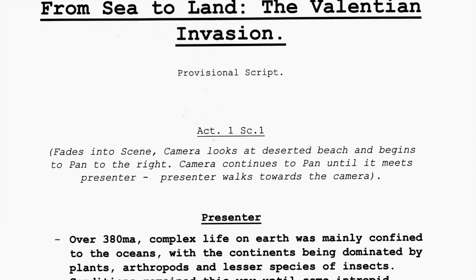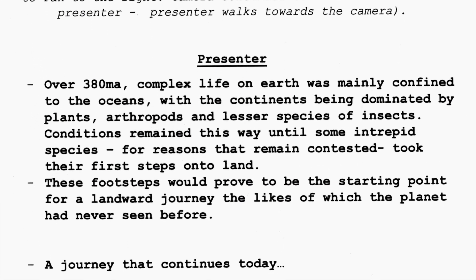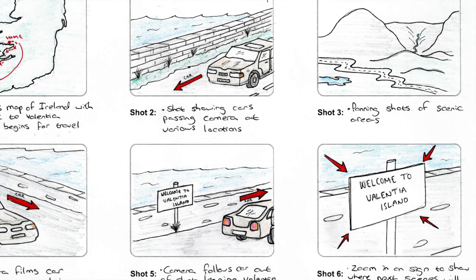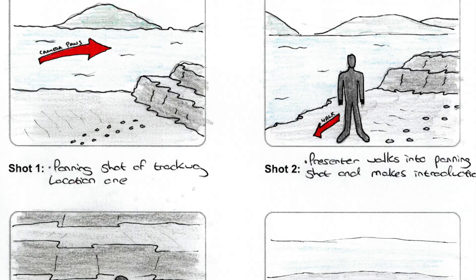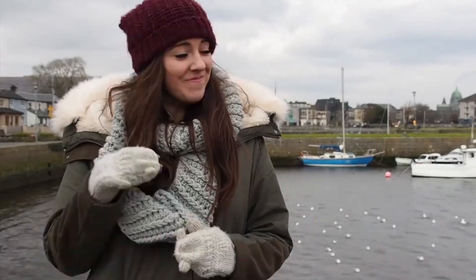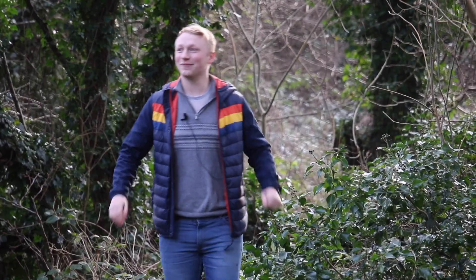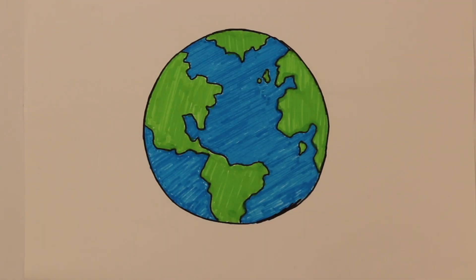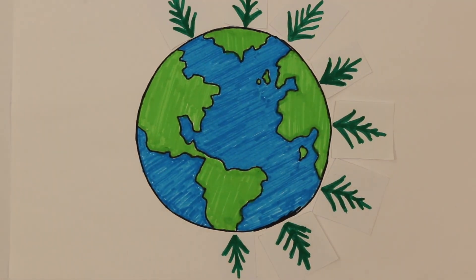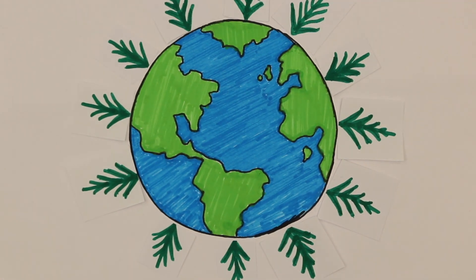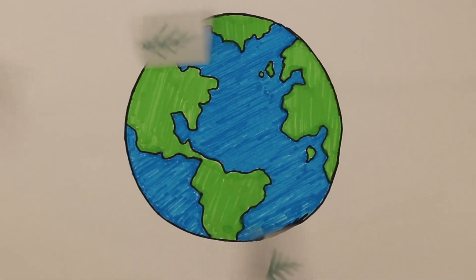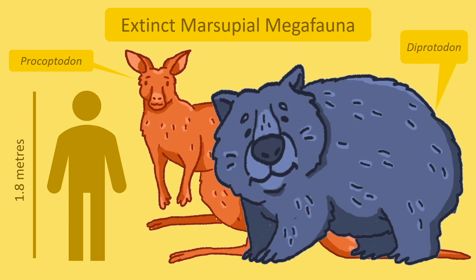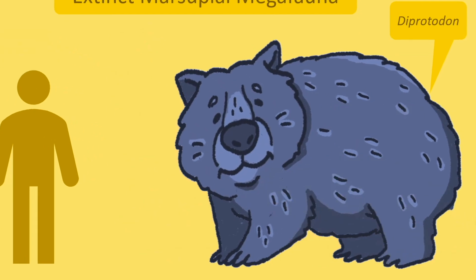The student teams storyboard, script, film, and finally edit their film productions in just six weeks before uploading them into the public domain on YouTube. The vast majority of the students who make these short films have no prior training in filmmaking and there are no production budgets. The films are literally made from scratch with smartphones and laptops, and much of what appears on screen is created by the students themselves.